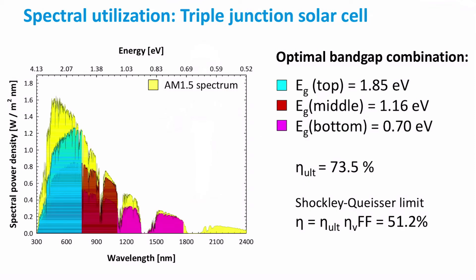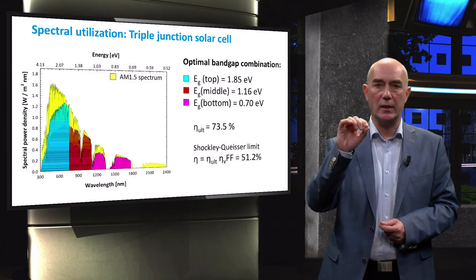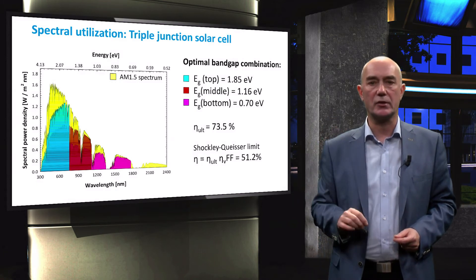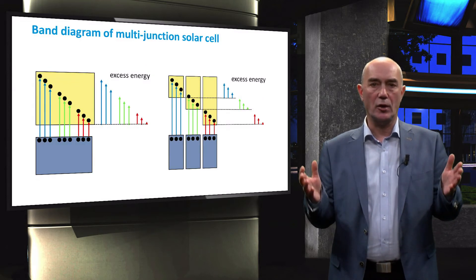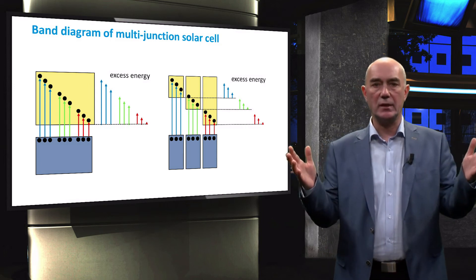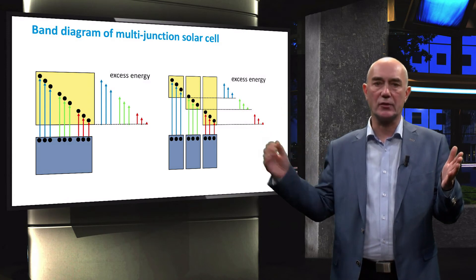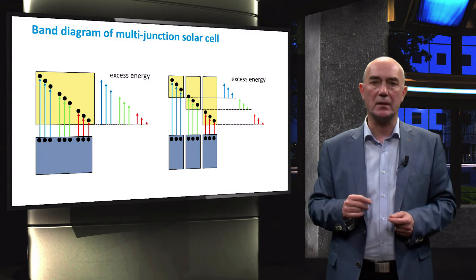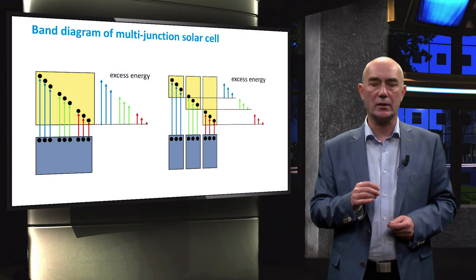We can stack one more solar cell to make a triple junction solar cell. The blue area represents the fraction of the spectrum utilized by the top cell, the brown area represents the fraction absorbed by the middle cell, while the pink area is the fraction absorbed by the bottom cell. By tuning the band gap of the absorber layers in a triple junction cell, we raise the ultimate conversion efficiency above 70% and the theoretically achievable conversion efficiency to 51%. The concept of multi-junction solar cells aims at reducing the thermalization loss and non-absorption loss. When we only have a single junction solar cell, a large amount of photon energy is lost through thermalization. When we stack absorber layers with different band gaps together, excess energy loss through thermalization is reduced.